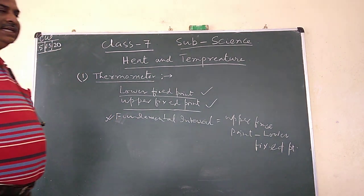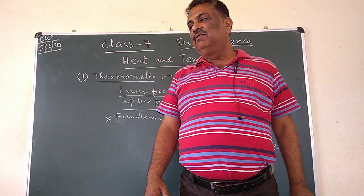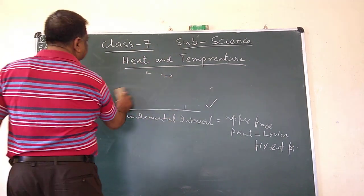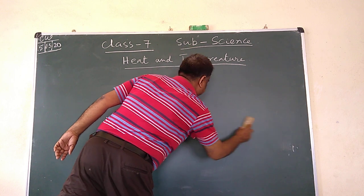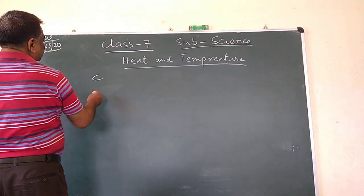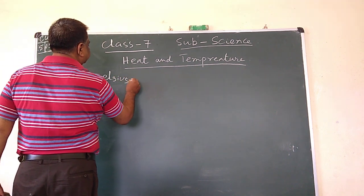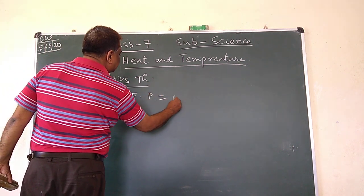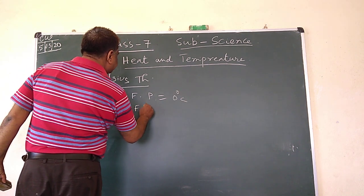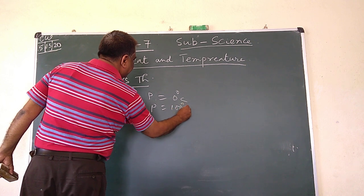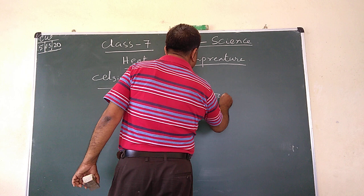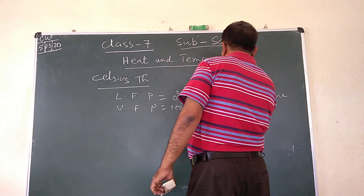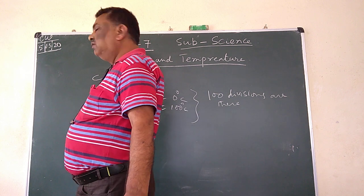We have three scales: Celsius, Fahrenheit, and Kelvin. For the Celsius thermometer, the lower fixed point is 0 degrees C and the upper fixed point is 100 degrees C. It is divided into 100 divisions, and one division is equal to 1 degree C.